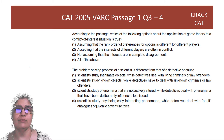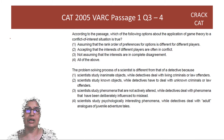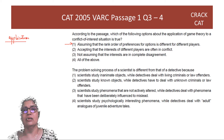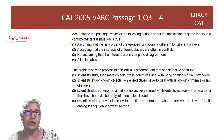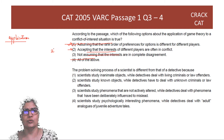Question: Which of the following about the application of game theory to a conflict of interest situation is true? Option 1 is an assumption you must accept, not an application outcome. Option 2 says the application is that interests of different players are often in conflict — this is looking good. Option 3 — not assuming that interests are incomplete — again, this is just an assumption. So the answer is option 2.